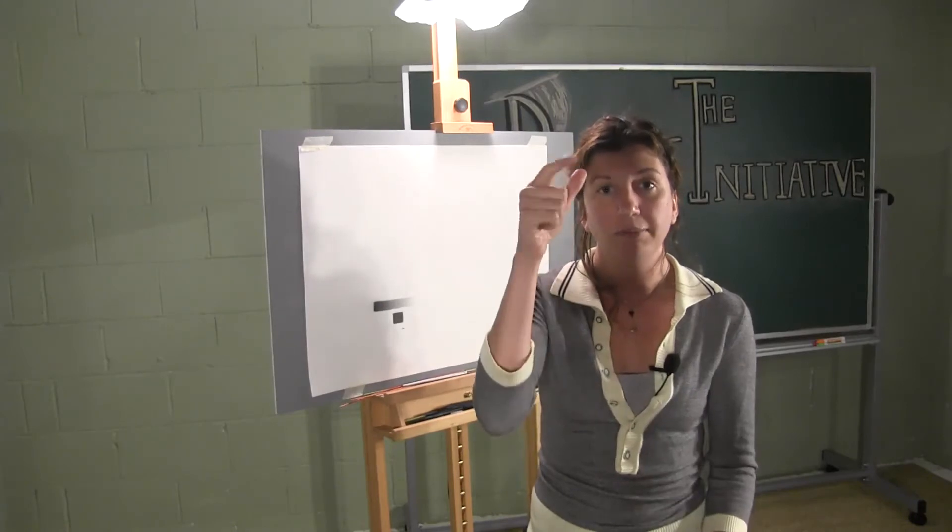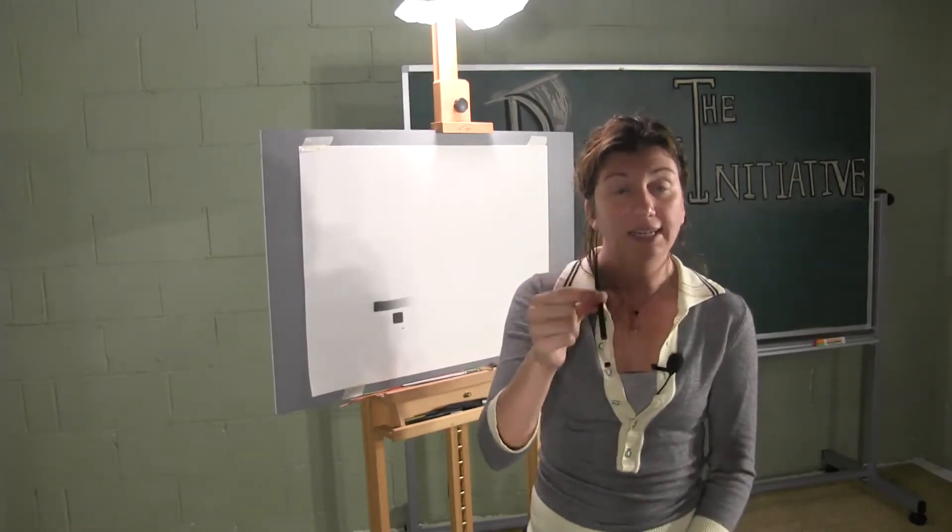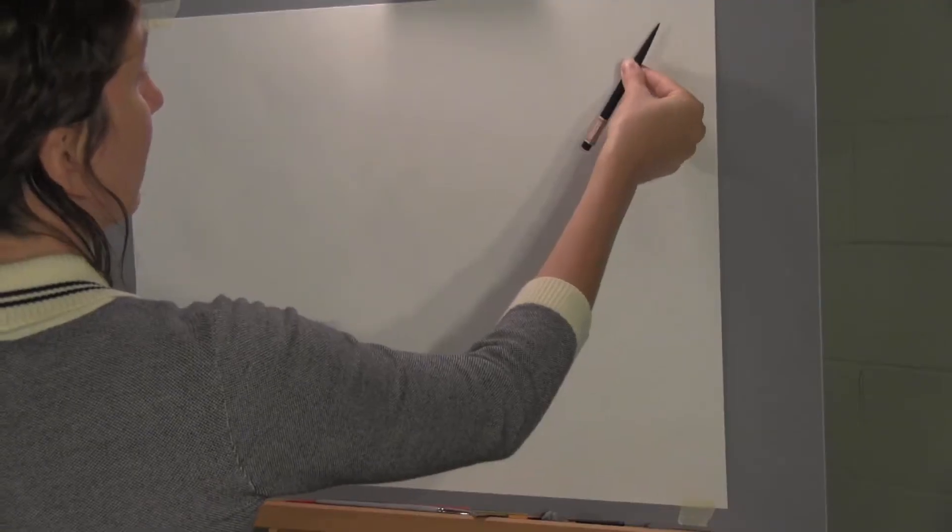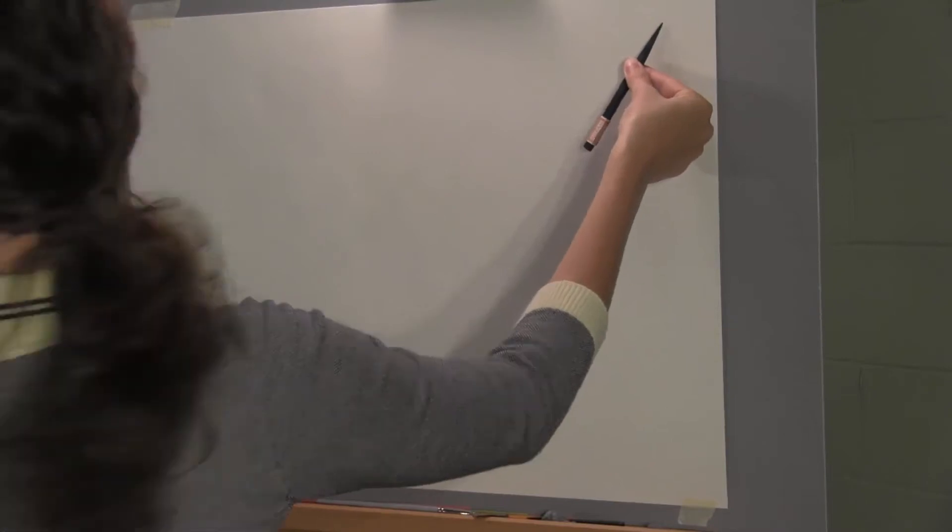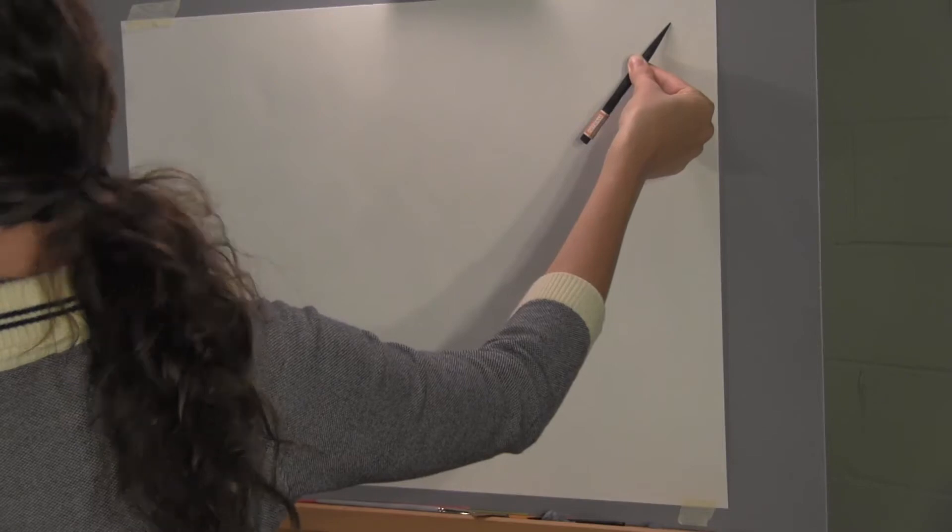So what I mean by that is if you take your thumb and forefinger and you pinch your charcoal and then you lean it against your paper, you can actually tilt using your fingernail as a fulcrum the tip of your charcoal to the paper.